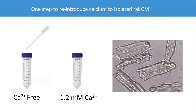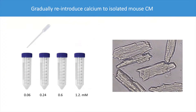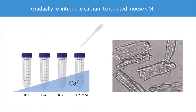Since the isolation buffer does not contain calcium, the critical next step is to reintroduce calcium back to the isolated cells. For rat cardiomyocytes, you can reintroduce calcium in one step by directly pipetting the settled myocytes slowly into buffer containing 1.2 millimolar calcium. For adult mouse cardiomyocytes, which are much more fragile and sensitive than rat cardiomyocytes, we need to reintroduce calcium in a stepwise manner with gradually increasing calcium concentrations, as shown in the attached protocol.